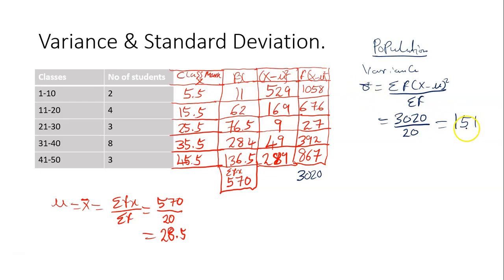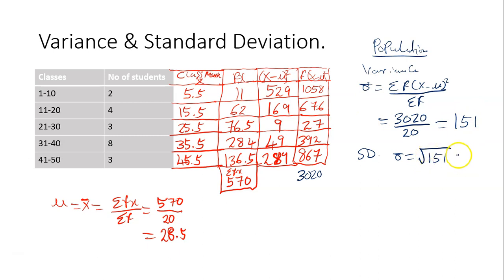Hence the population variance is 151. If you want to find the population standard deviation, which is sigma, it is the square root of the population variance. So the square root of 151 gives us 12.288. This is the population variance and this is the population standard deviation.